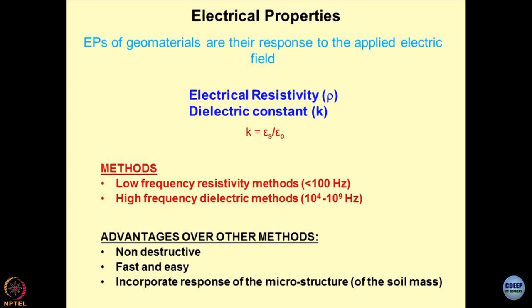There are two more things to remember: electrical properties of geomaterials are their response to an applied electric field. The dielectric constant is the ratio of ε_s — the permittivity of soil — divided by ε₀ — the permittivity of free space. We utilize these concepts to decode the geomaterial.